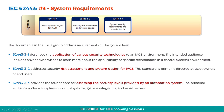The third section is Systems Requirements, that is 62443.3. The documents in this group address requirements at the system level. 62443.3.1 describes the application of various security technologies to an IACS environment. 62443.3.2 addresses security risk assessment and system design for IACS, primarily directed at asset owners or end users. 62443.3.3 provides the foundations for assessing the security levels provided by an automation system, with the principal audience including suppliers of control systems, system integrators, and asset owners.